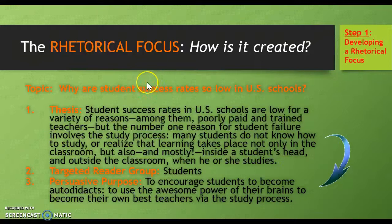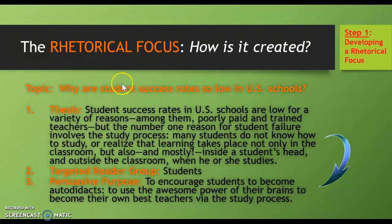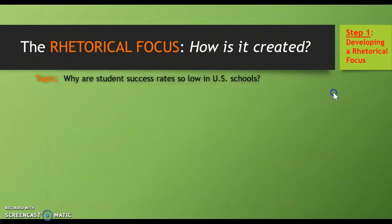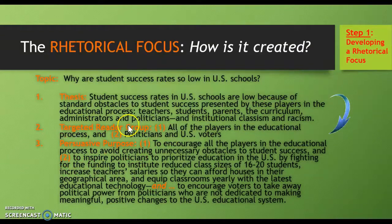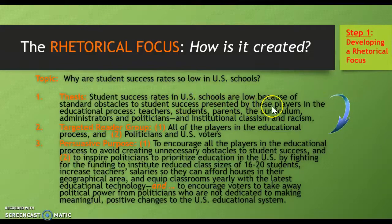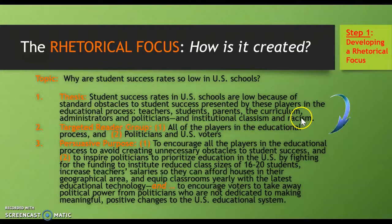Could I come up with more than one rhetorical focus for this topic? Of course. A classroom of 40 students might each come up with a different one. Here's another focus: the thesis is that student success rates in U.S. schools are low because of standard obstacles presented by players in the educational process — teachers, students, parents, the curriculum, administrators, politicians, and institutional classism and racism built into the system for generations.